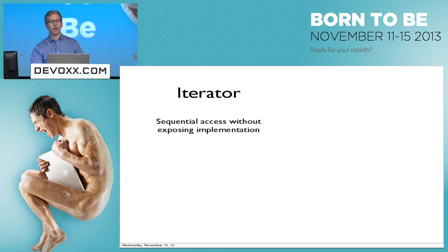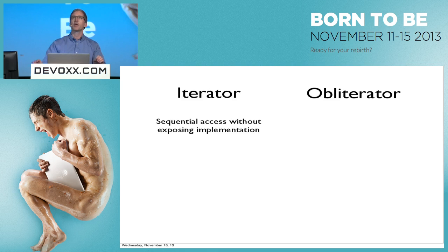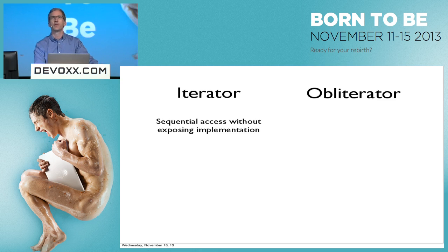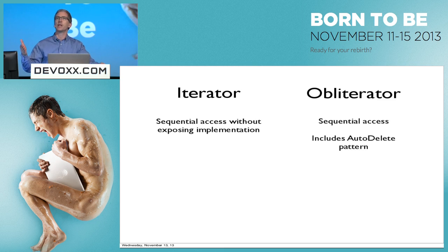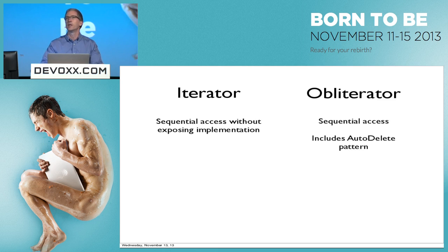The iterator pattern is about sequential access without exposing the underlying implementation details. And then we have the obliterator pattern, which is essentially the same thing — responsible for visiting these objects in sequence. But in addition, it adds the important capability of the auto-delete pattern. As it visits each of these elements, it will then remove that object, eventually deleting the list and the calling function, the application that called it, sometimes the operating system, the computer on which it was run, and possibly the dimension in which we all exist.